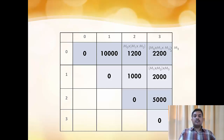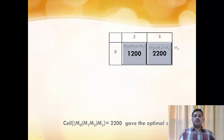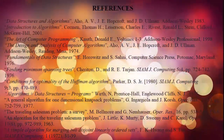Now we need to see how the multiplication is supposed to be done. The minimum cost is 2,200 for M0 to M3. We got this by multiplying (M0,M1,M2) first and then multiplying M3 to the result. Looking at cell (M0,M2), the value 1,200 was achieved by M0×(M1×M2). So the final order is: M0×(M1×M2) first, then multiply M3 — written as (M0(M1M2))M3. The complexity of chain matrix multiplication is O(n³). Thank you for watching. Keep watching, keep learning. Please subscribe to my channel.